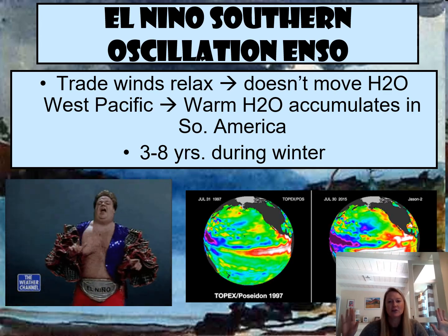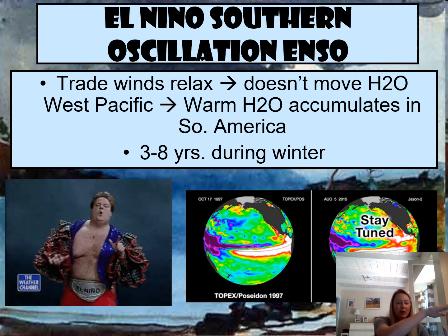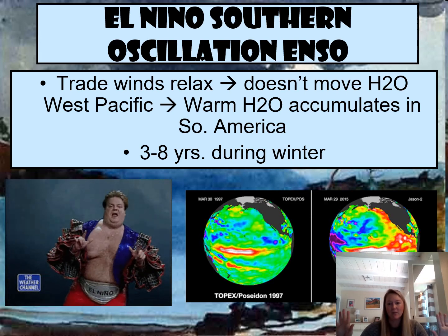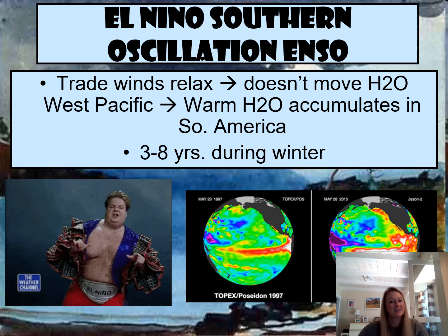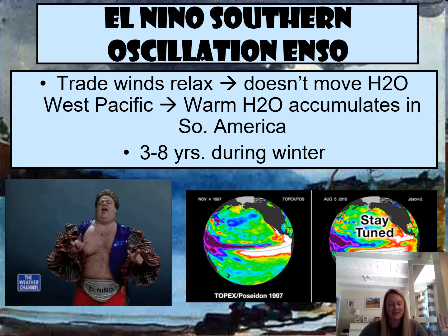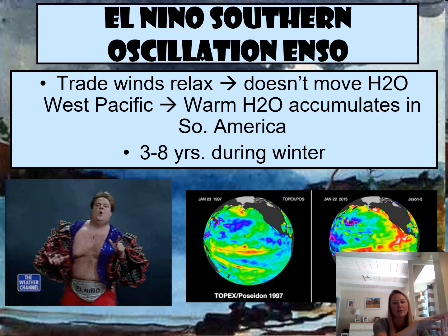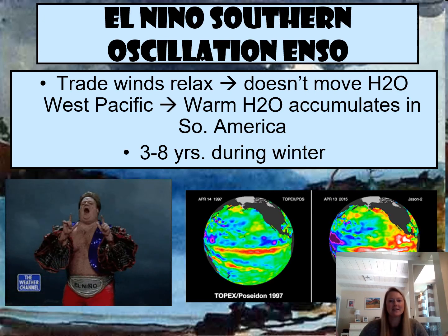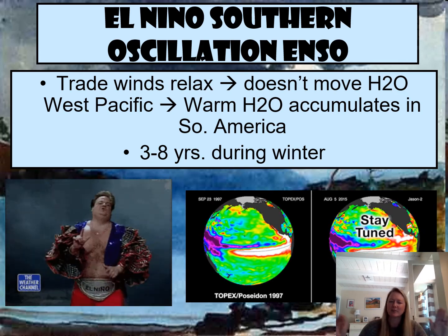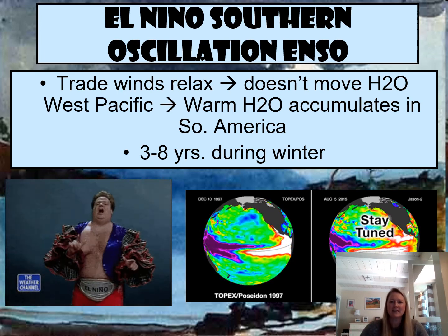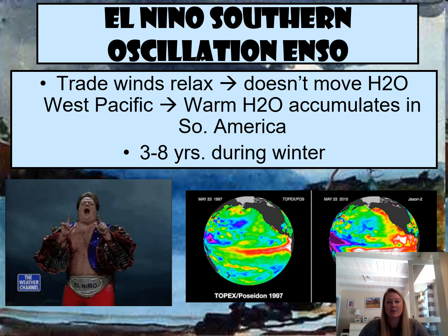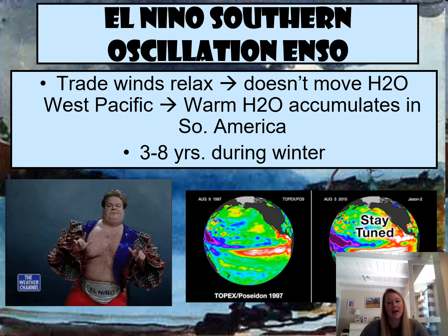In an El Niño year, those trade winds stop. Instead of the hot water moving to the West Pacific, it stays in the East Pacific. Scientists still don't fully understand why the trade winds stop, but they know it happens in winter every three to eight years. El Niño was named by Peruvians, who noticed it because their fisheries would collapse. They named it El Niño — meaning 'little baby' — because it occurred around Christmas time.